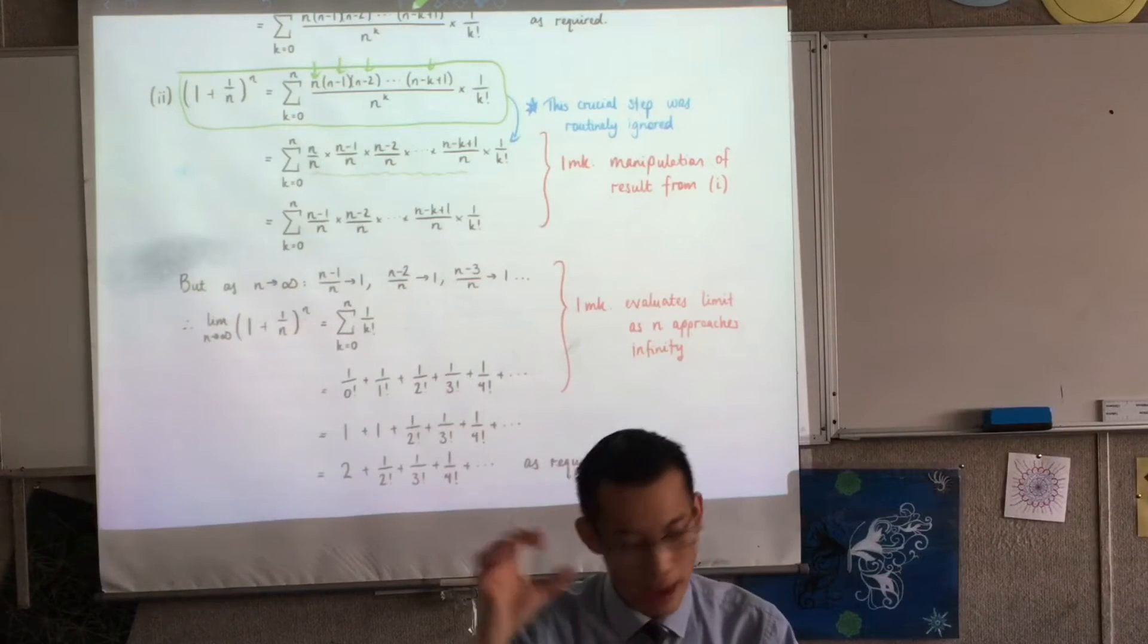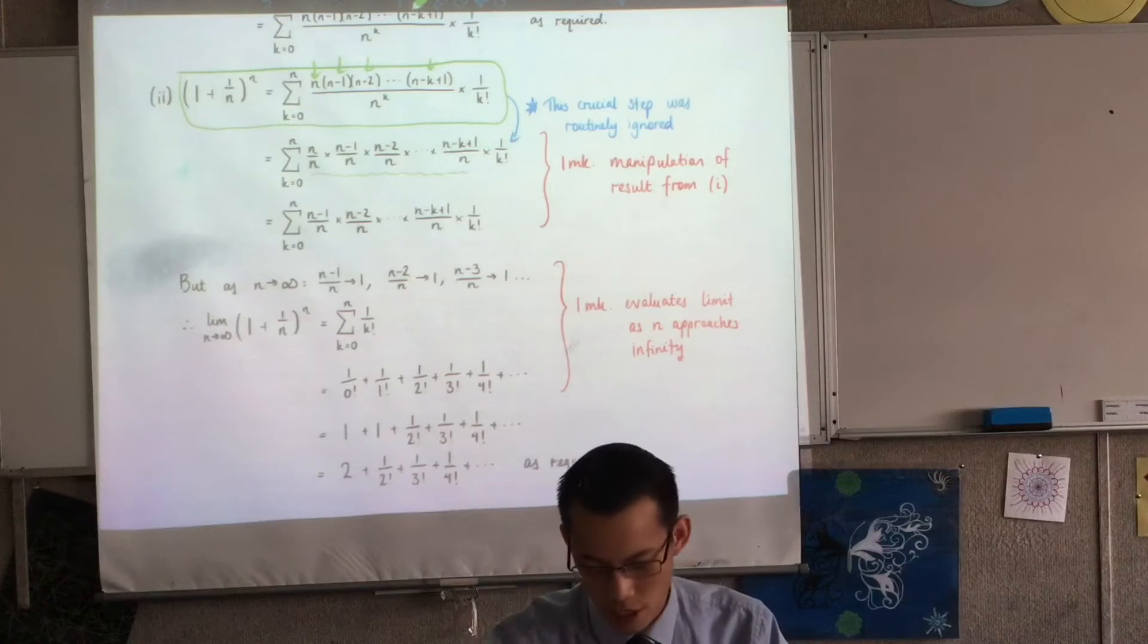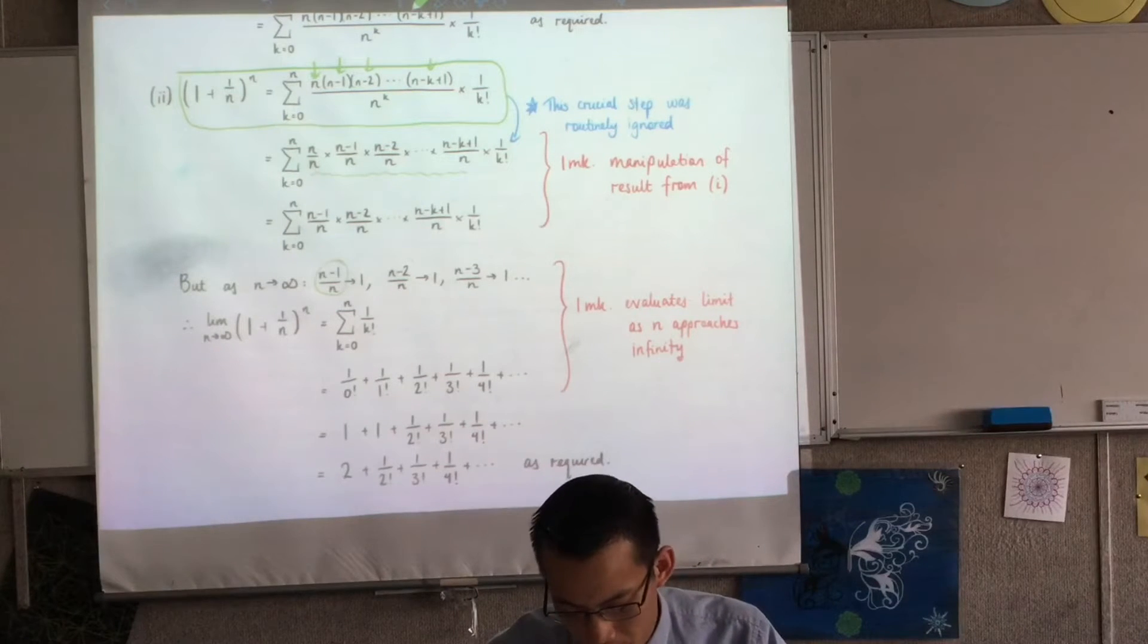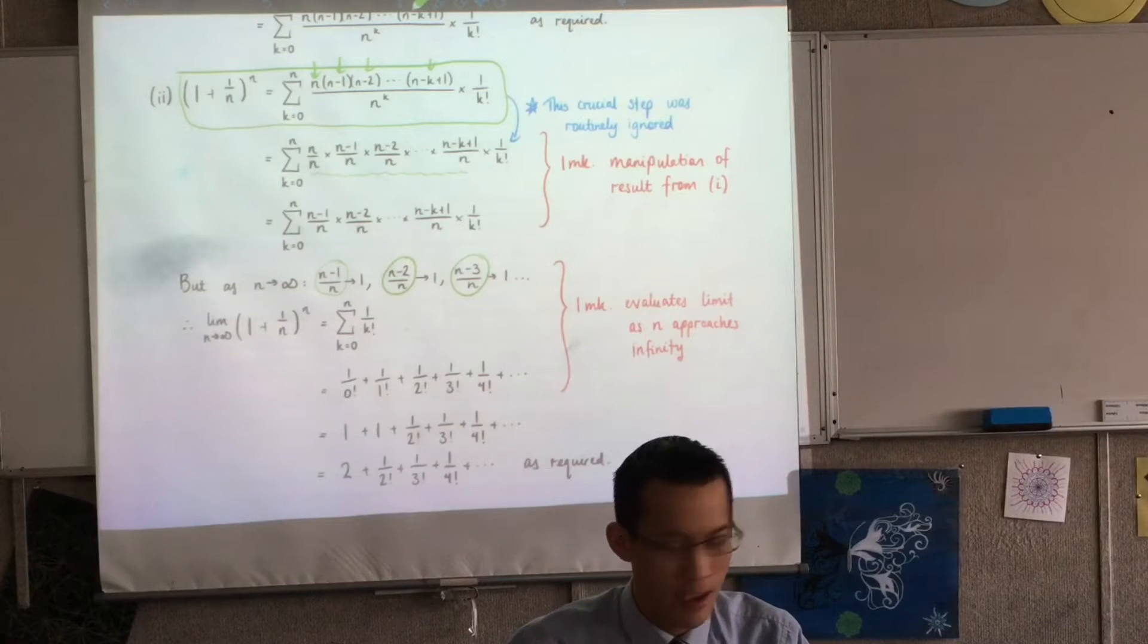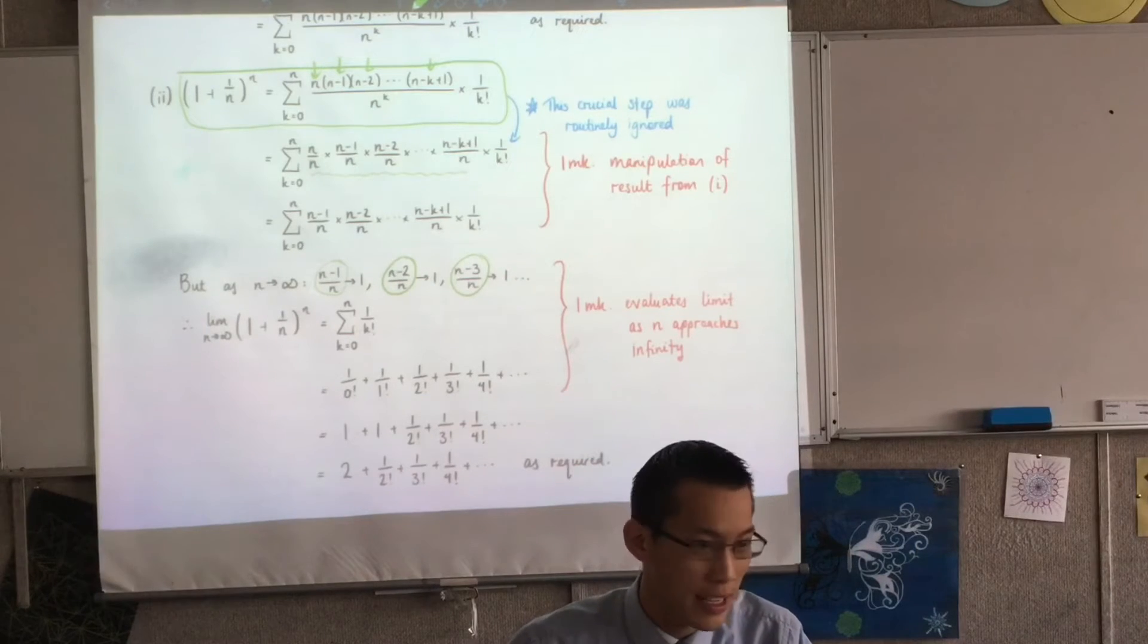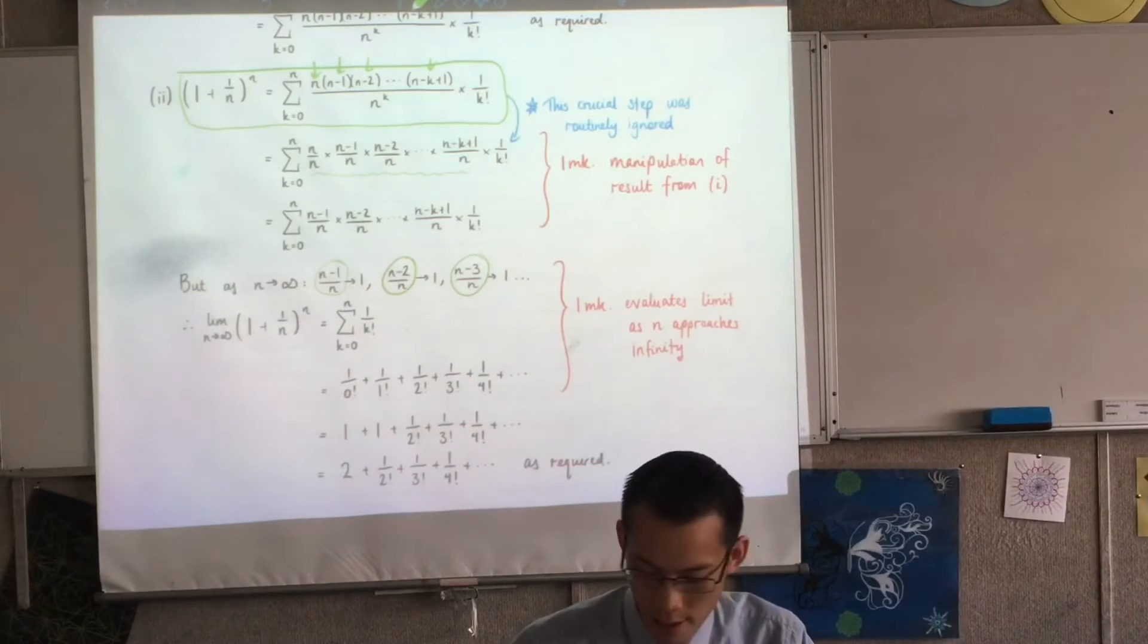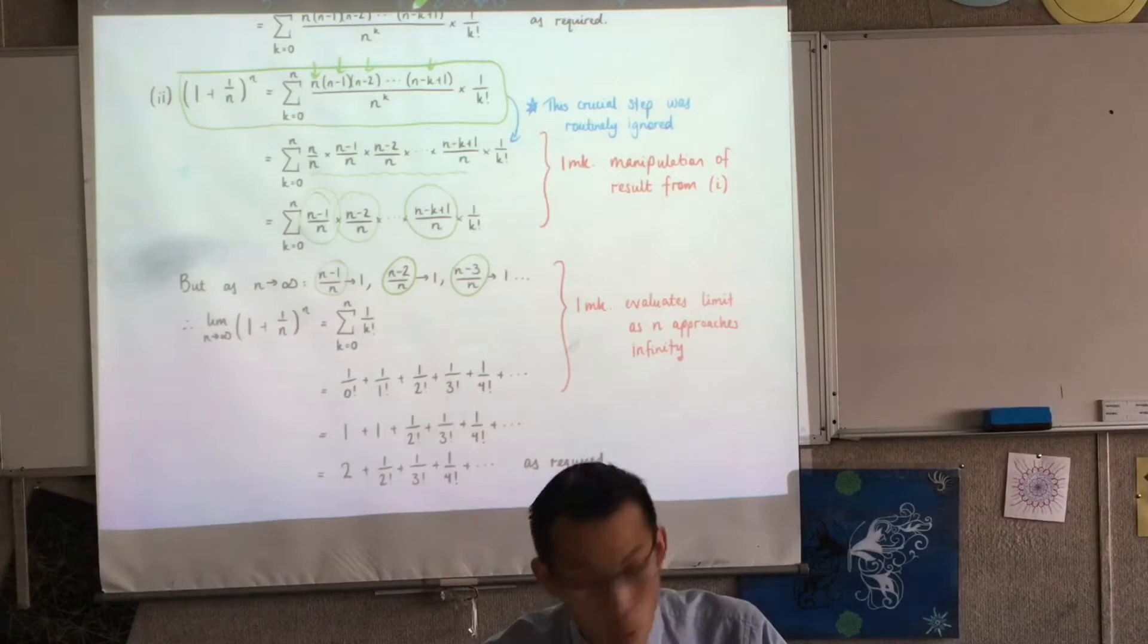Once you line up the terms, you pair them up, numerator, denominator, numerator, denominator. Every single one has got its matching pair. Each one of them, when you evaluate the limit, I don't care how big that k is going to get. It could be n minus a million. When n gets to infinity, it's still going to go towards one. So all of these guys, every single one of these approaches one.